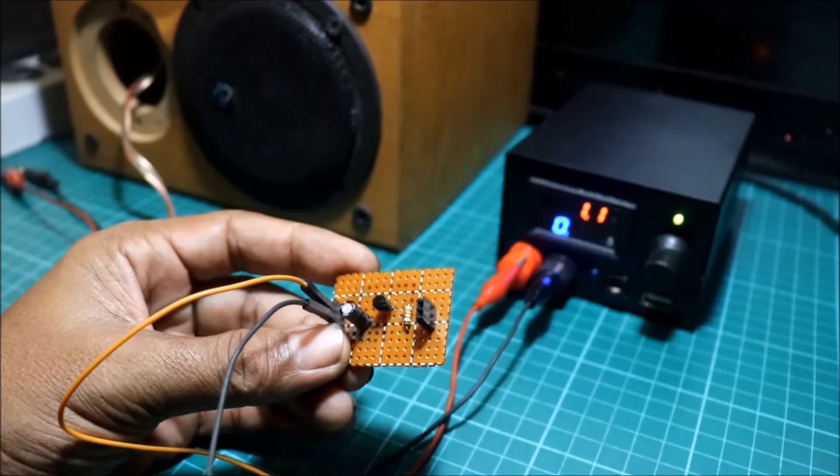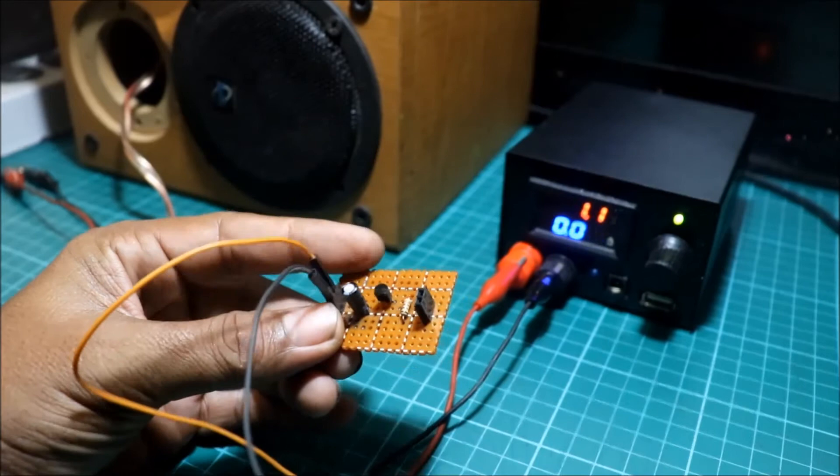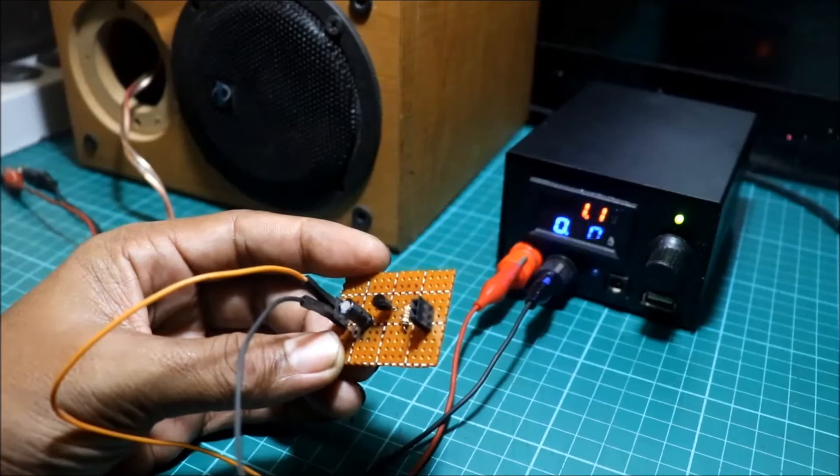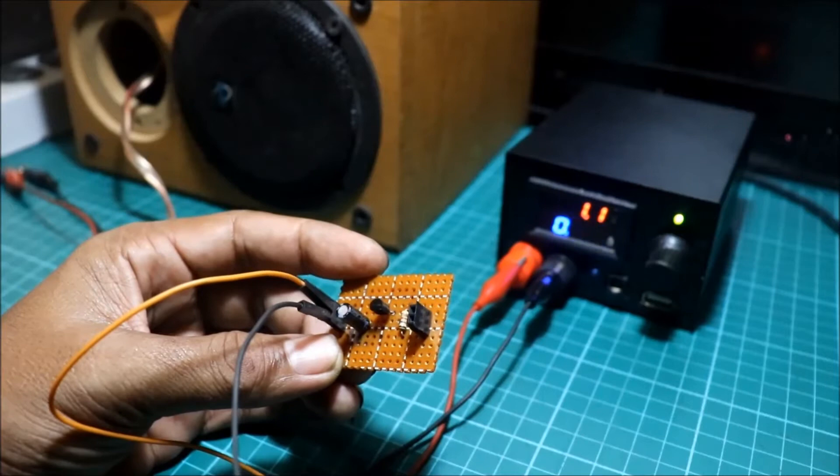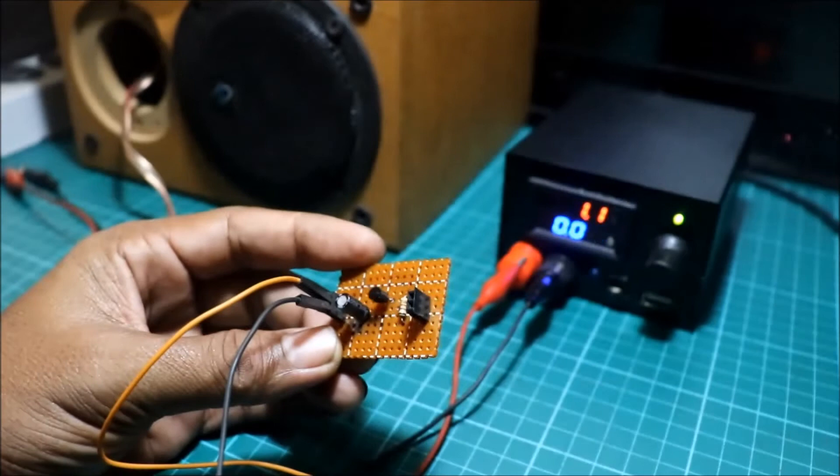Itong Isaki oscillator, ang tawag din dito ay relaxation oscillator. Ang waveform nito ay irregular waveform. So, pag sinabing relaxation oscillator, ang mga waveform, hindi regular. Pag sinabing regular waveform, yun yung mga sine wave. Magagandang waveform yun. Sine wave. Yung sa analog. Di ba yung sound eh, analog. Yun yung waveform ng sound.